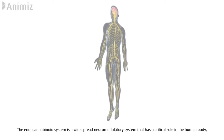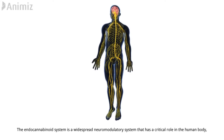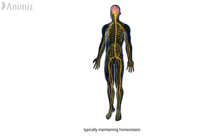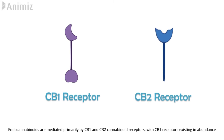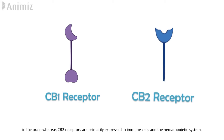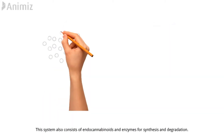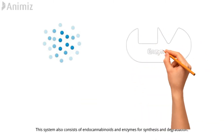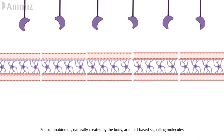The endocannabinoid system is a widespread neuromodulatory system that has a critical role in the human body, typically maintaining homeostasis. Endocannabinoids are mediated primarily by CB1 and CB2 cannabinoid receptors, with CB1 receptors existing in abundance in the brain, whereas CB2 receptors are primarily expressed in immune cells and the hematopoietic system. This system also consists of endocannabinoids and enzymes for synthesis and degradation. Endocannabinoids, which are naturally created by the body, are lipid-based signaling molecules that modulate the endocannabinoid system by binding to cannabinoid receptors.